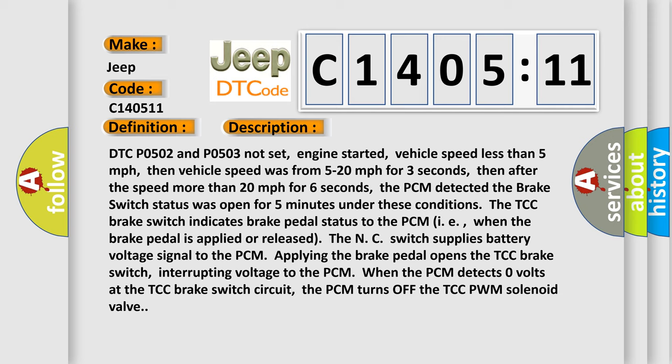DTC P0502 and P0503 not set, engine started, vehicle speed less than 5 miles per hour. Then vehicle speed was from 5 to 20 miles per hour for 3 seconds, then after the speed more than 20 miles per hour for 6 seconds. The PCM detected the brake switch status was open for 5 minutes.